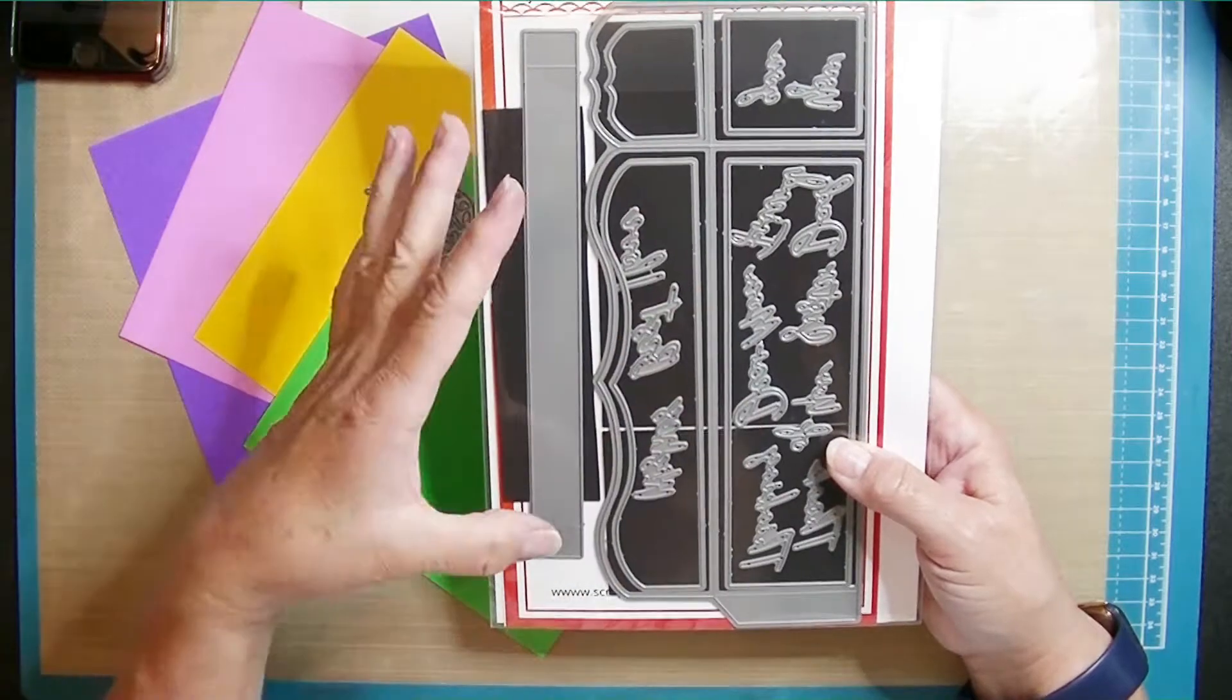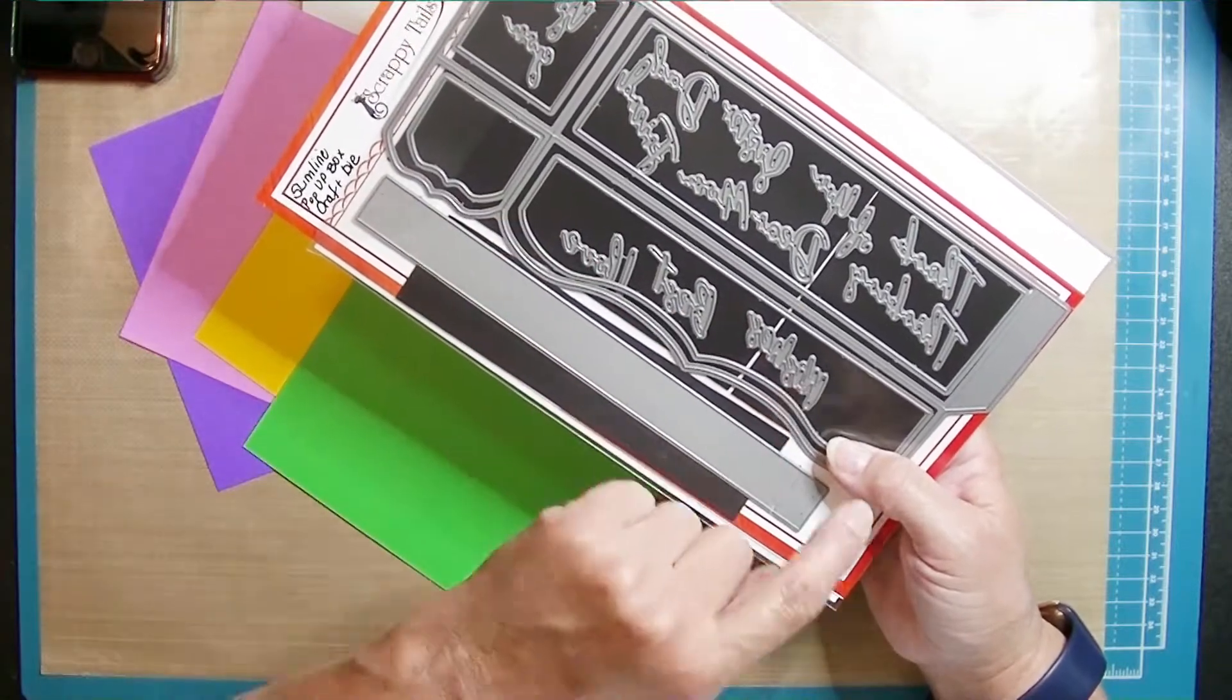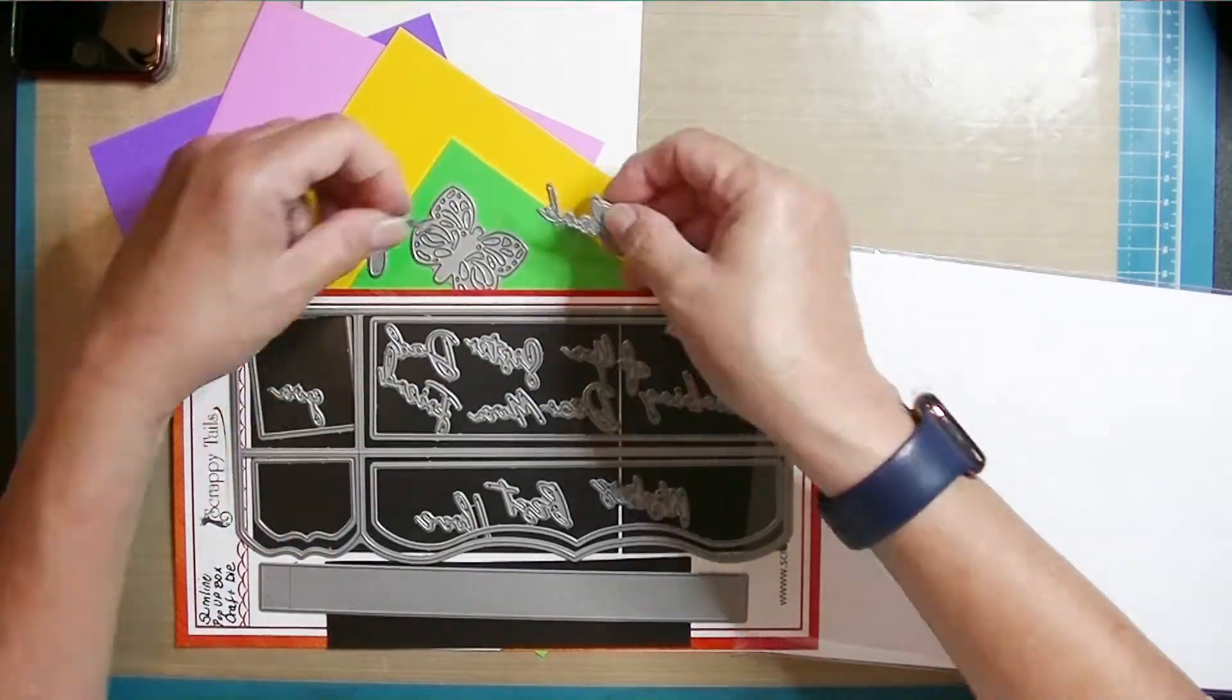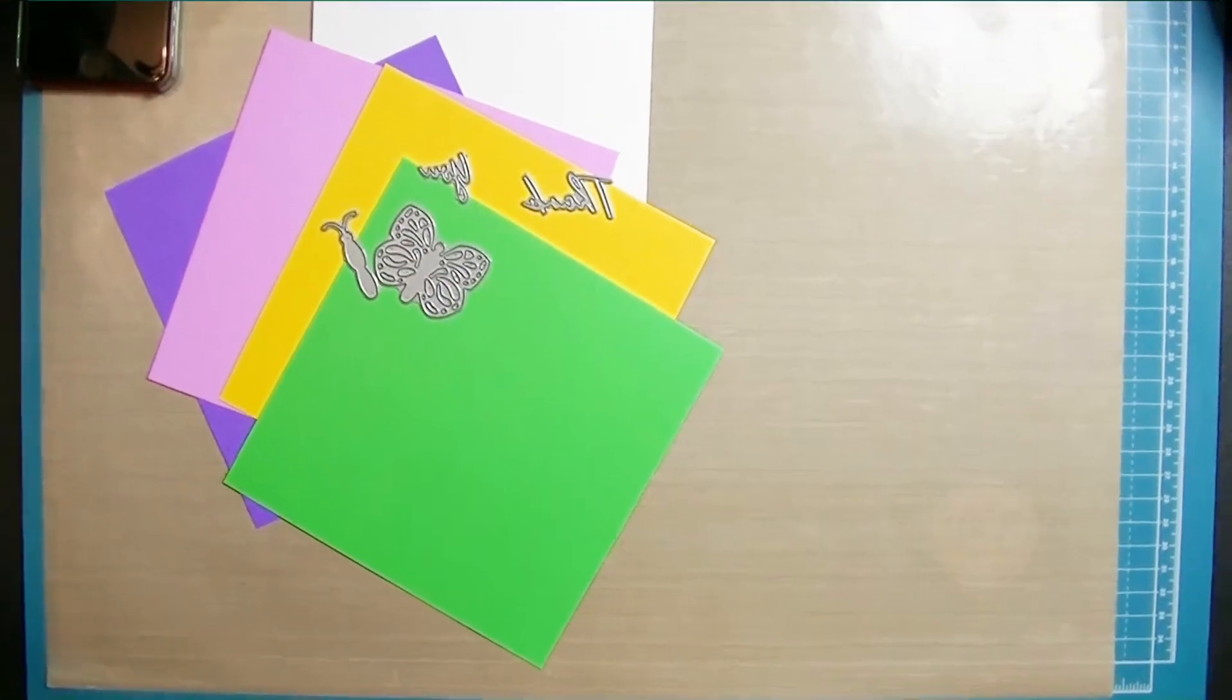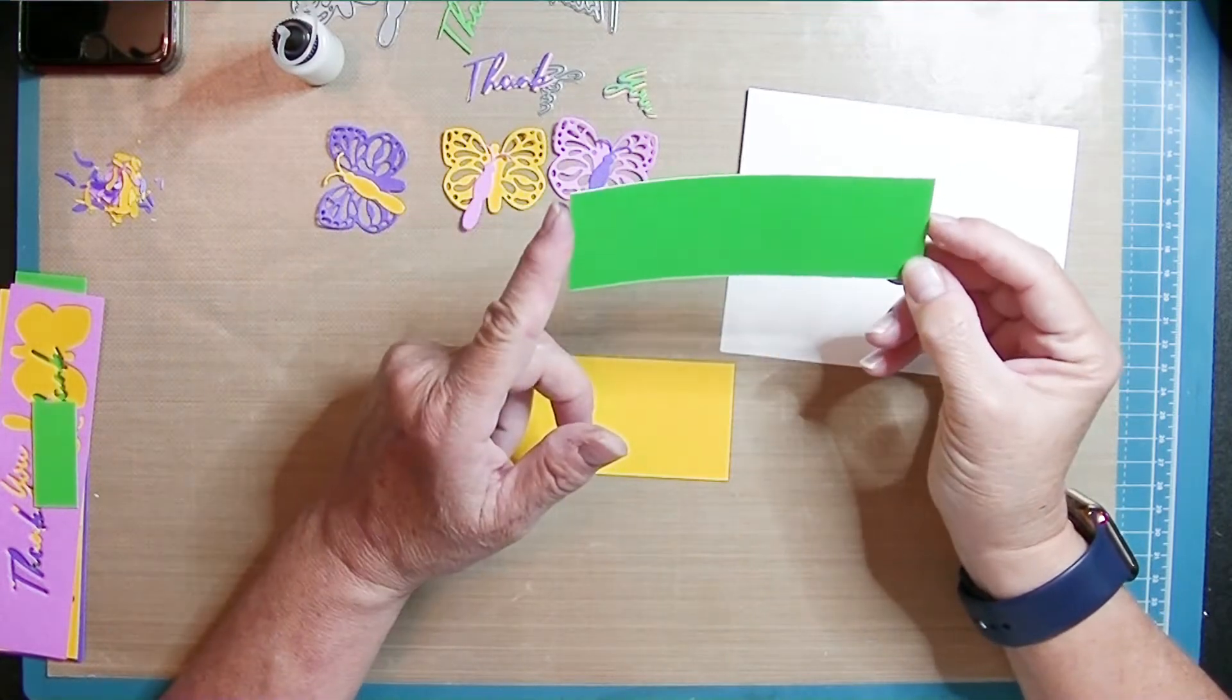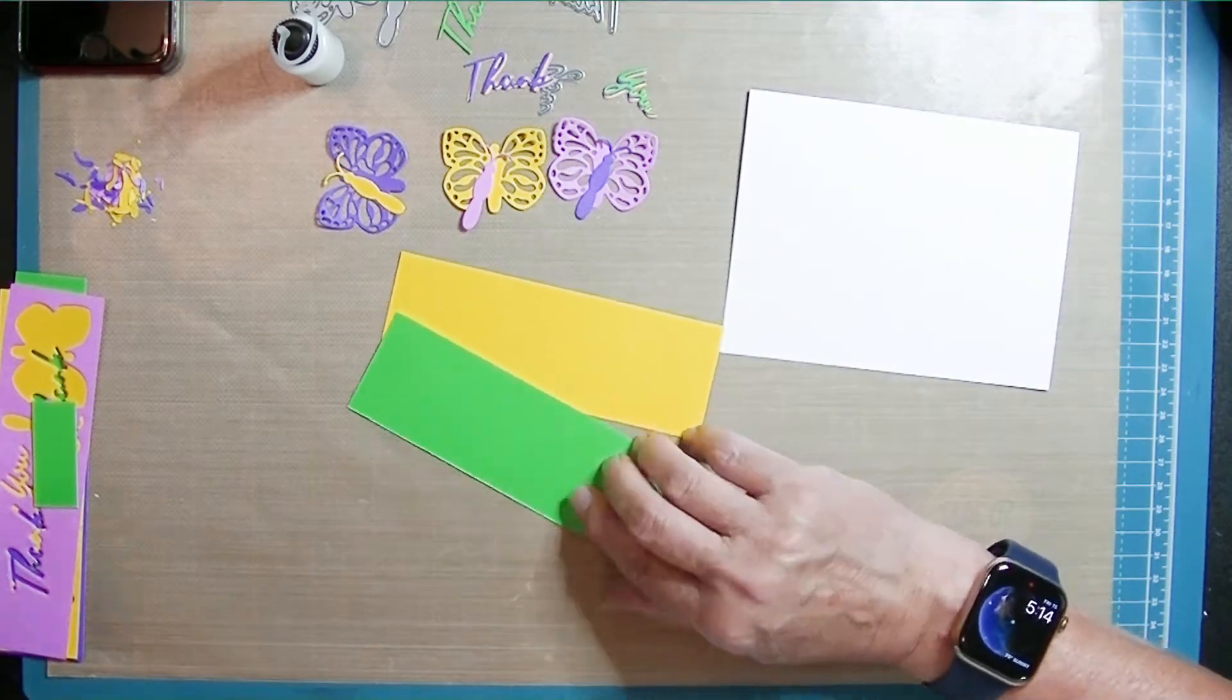And then I have the slimline pop-up box craft die. And I was excited to get this slimline card pop-up card die set to use it. But I've been using all of those great word phrases in there. So I'm going to make a thank you card. So I've cut a piece of green cardstock at one and three quarters by five and a quarter. The yellow is one and seven eighths by five and three eighths.